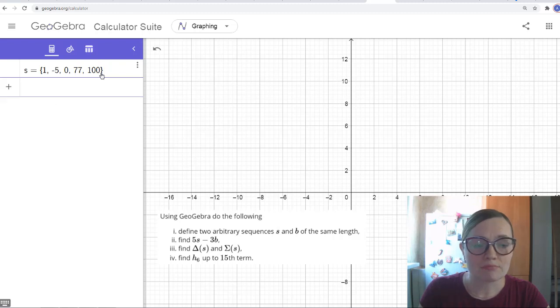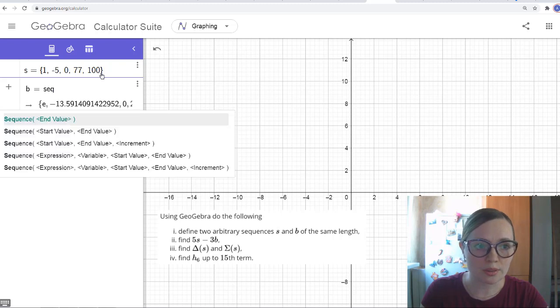Let's maybe introduce another sequence. There are some other ways to introduce sequences. For example, if you want to use some formula, we will use the tool sequence. You see how many options you have here. So the first one, you need to enter just end value. This means that the sequence will contain the positive integers ending with this given value. And the increment is 1, of course.